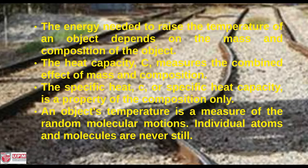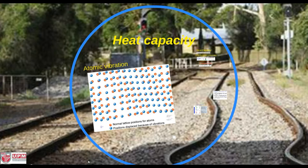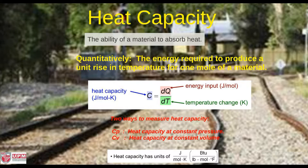An object's temperature is a measure of the random molecular motion. Individual atoms and molecules are never still. A solid material when heated experiences an increase in temperature, signifying that some energy has been absorbed. Heat capacity is a property indicative of a material's ability to absorb heat from the external surroundings. It represents the amount of energy required to produce a unit temperature rise.